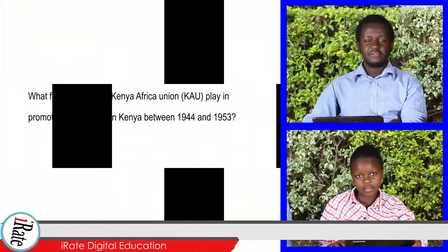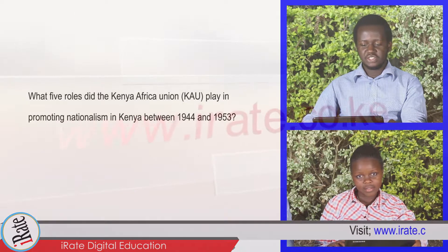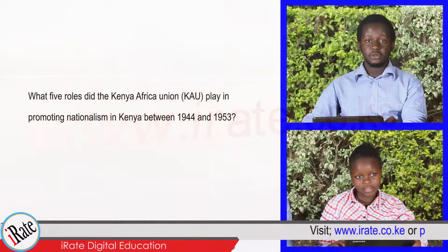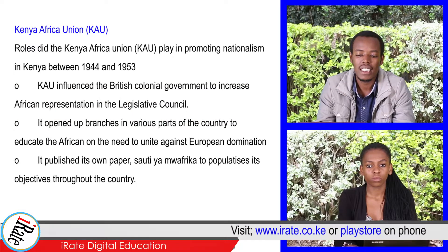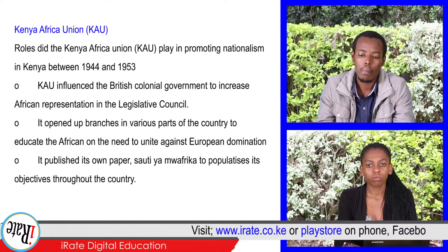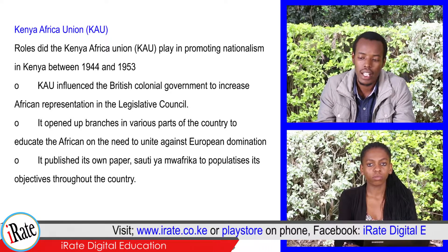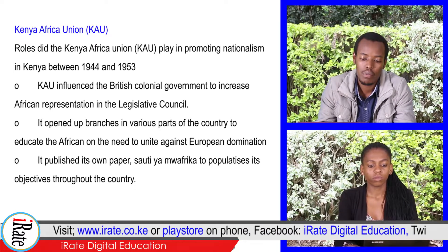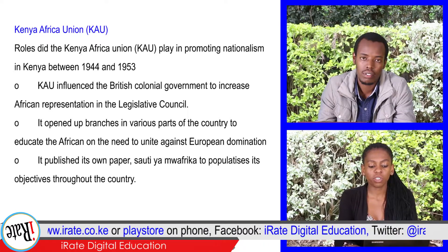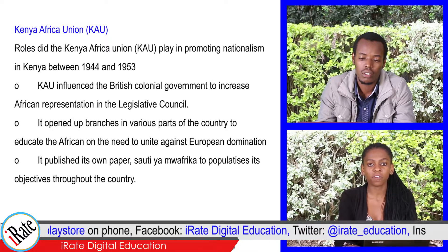What five roles did the Kenya African Union, that is KAU, play in promoting nationalism in Kenya between 1944 and 1953? The roles that the Kenya African Union played in promoting nationalism in Kenya between 1944 and 1953 were: KAU influenced the British colonial government to increase African representation in the Legislative Council.